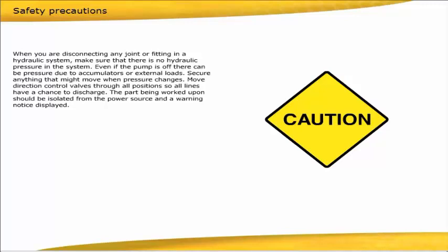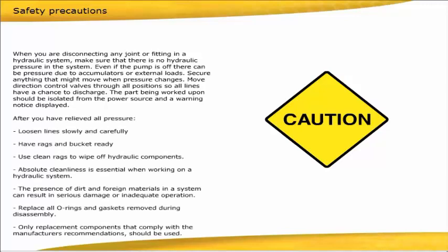Secure anything that might move when pressure changes. Move direction control valves through all positions so all lines have a chance to discharge. The part being worked upon should be isolated from the power source and a warning notice displayed. After you have relieved all pressure, loosen lines slowly and carefully.